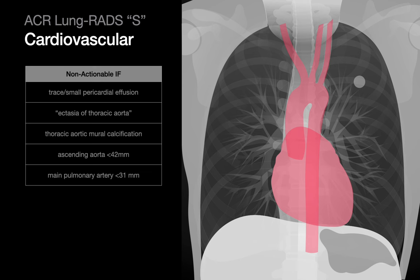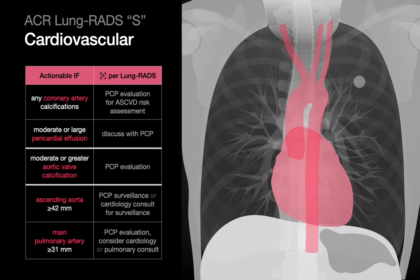In the cardiovascular system, small pericardial effusions, ectatic thoracic aortas, aortic mural calcification, ascending aortas under 42 mm diameter, and main pulmonary arteries under 31 mm diameter and above may be actionable.